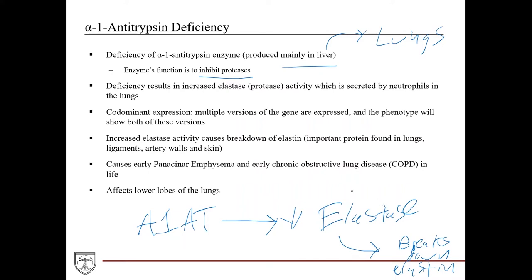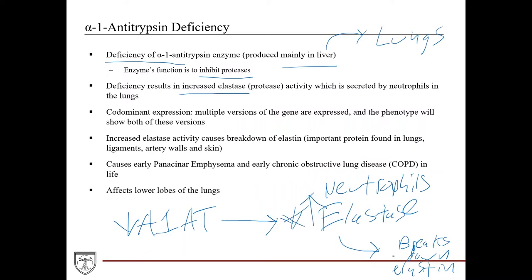Elastase breaks down elastin, which is a critical component of lung tissue because it helps make it elastic and carry out the function of breathing. Elastase is typically secreted by neutrophils, which serves an immunological function — that's fine, but too much of it will lead to breakdown of lung tissue via elastin degradation. When alpha-1 antitrypsin is decreased due to a mutation, you get increased elastase activity and increased breakdown of elastin in the lung tissue.